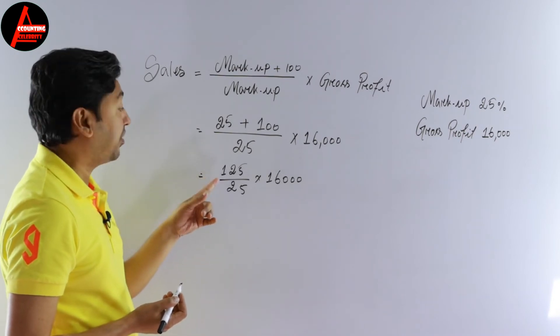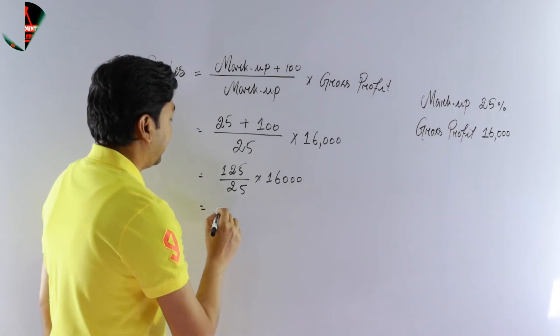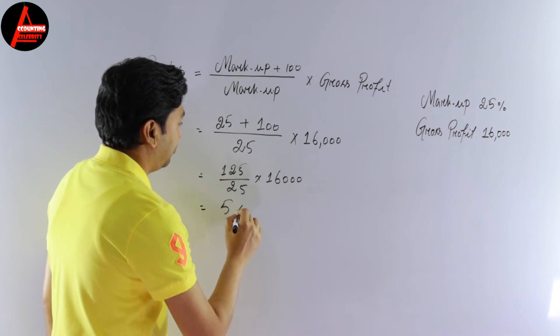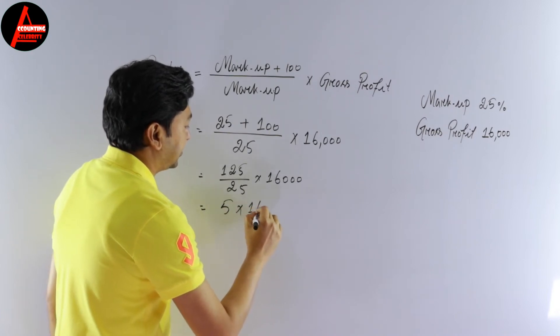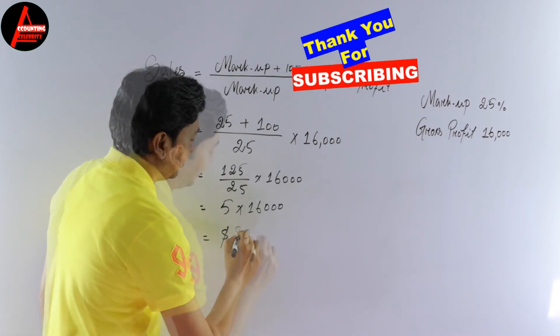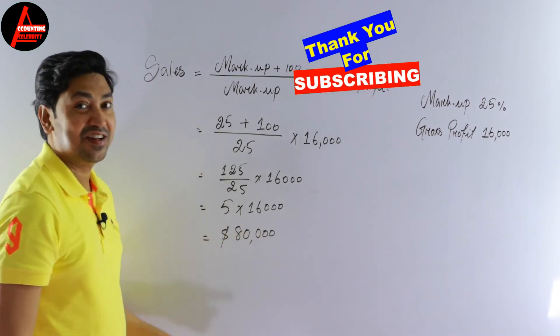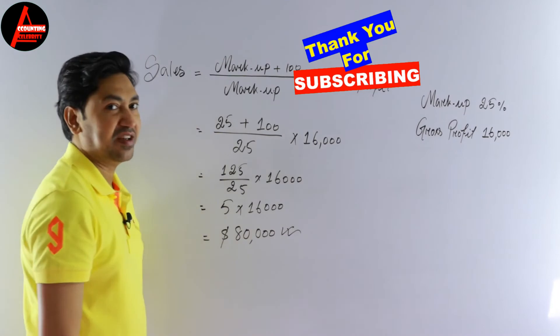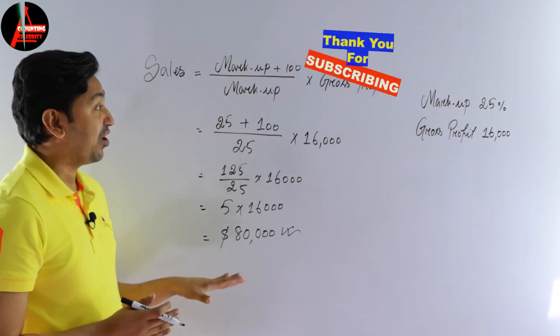So if we divide, it is 5. So 5 times $16,000. If we multiply it is $80,000. This is selling price, total selling price.